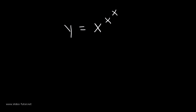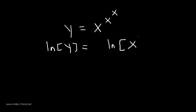The first thing that we should do is set it equal to y. That's step 1. In the next step, we need to take the natural log of both sides. The reason why we want to do that is because the natural log function allows us to move the exponent to the front.